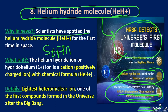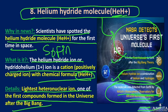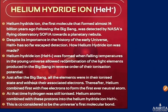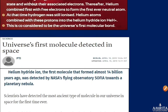Scientists have spotted the helium hydride molecule for the first time in space. The helium hydride ion (HeH+) is a cation — positively charged — and is the lightest heteronuclear ion. It is one of the first compounds that formed in the universe after the Big Bang, approximately 14 billion years ago, detected toward a planetary nebula.